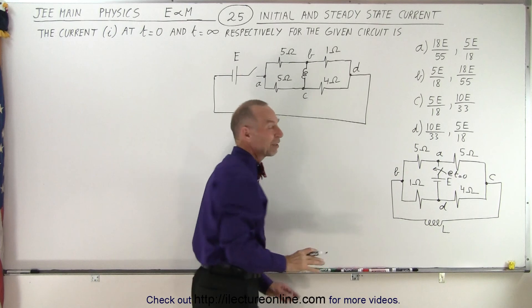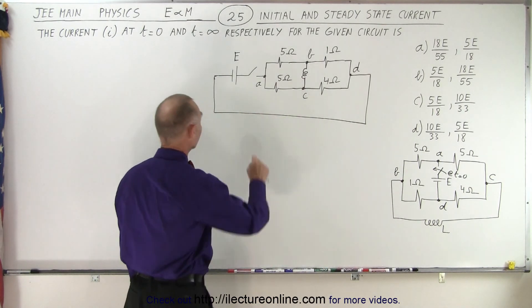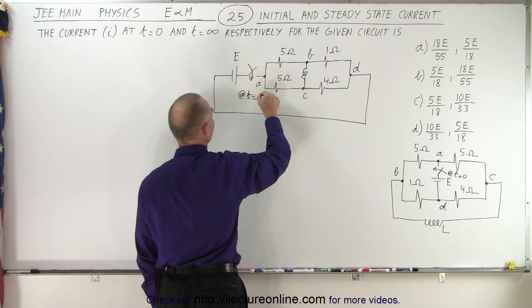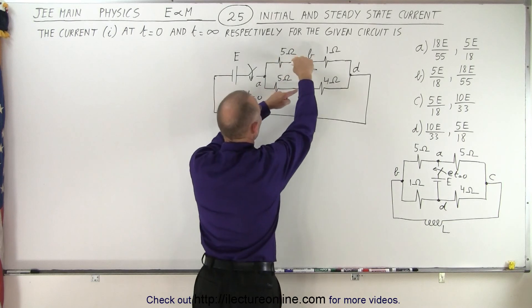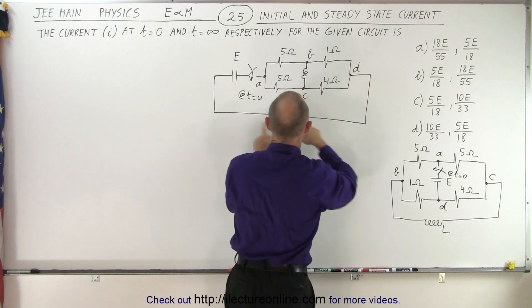So notice that this circuit makes a whole lot more sense than that circuit, at least it does to me. So now we can see that we close the switch at time equals zero, and then current begins to flow, splits up between these two, then either goes to the inductor or not, goes to these two, come back together, and so forth.